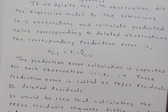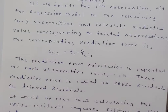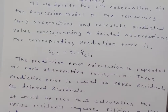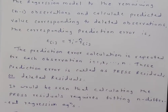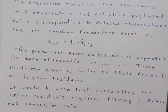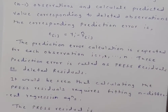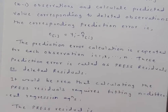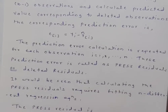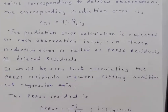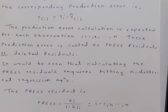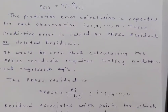Calculating the PRESS residuals requires fitting n different regression equations, since each time we delete the i-th observation a new model is fitted. The PRESS residual is given by: PRESS(i) = e(i) / (1 − h_ii), for i varying from 1 to n.